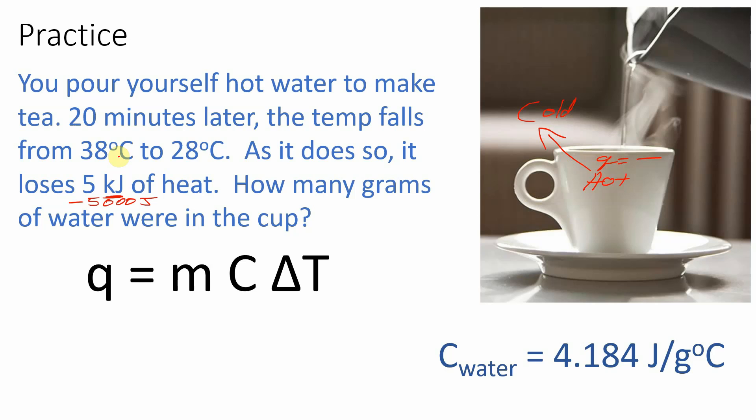The second is remember we got to get final minus initial. Well this was the final temperature and that was the initial. So we're going to subtract those two. Okay let's see what it looks like. So there's our negative 5,000 joules. We have 28 minus 38 which gives us negative 10. When we divide the negative 10 you see how the negative goes away which is good because we can't have negative grams.